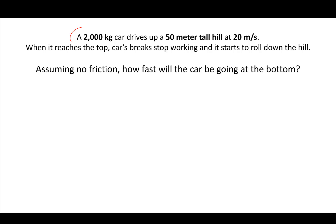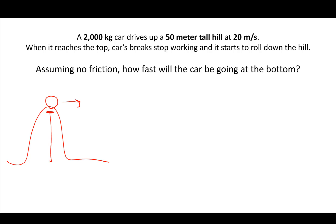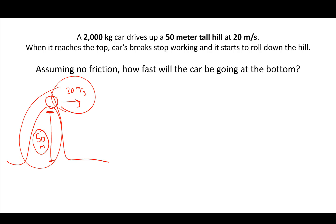The second problem: a 2,000-kilogram car is driving up a 50-meter hill at 20 meters per second. When the car reaches the top, the brakes stop working and it rolls down the hill. Assuming there's no friction, how fast will the car be going at the bottom? At the very top of the hill, the car is 50 meters above the ground and also moving at 20 meters per second. So the initial conditions have both gravitational energy and kinetic energy — both must be taken into account.